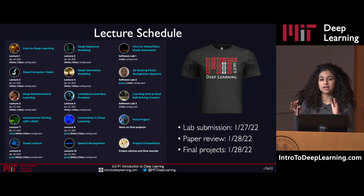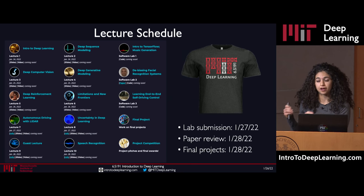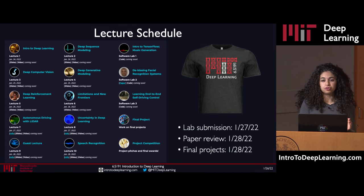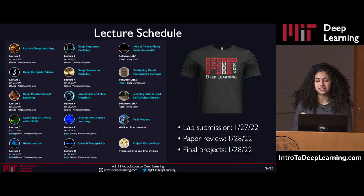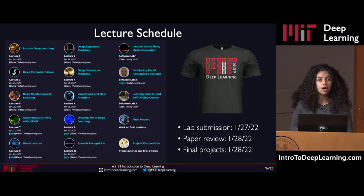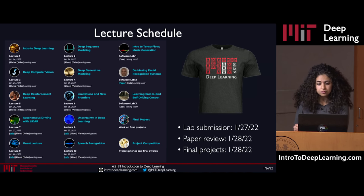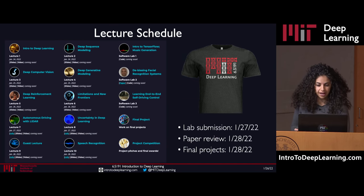Regarding deadlines: Lab 3, the Reinforcement Learning Lab, was released today. All three labs are due tomorrow night at midnight, uploaded to Canvas. Note that lab submission is not required to receive a passing grade — it's only for entry into the project competitions. What is required to receive credit for the course is either the deep learning paper review or the final project presentation, both due Friday, the last day of class.